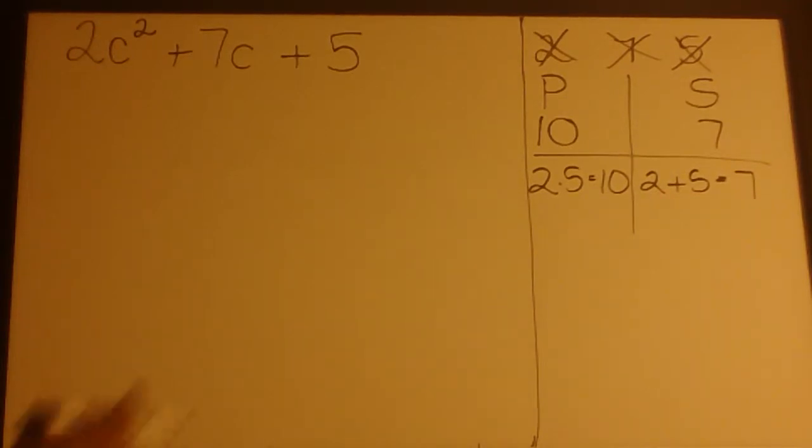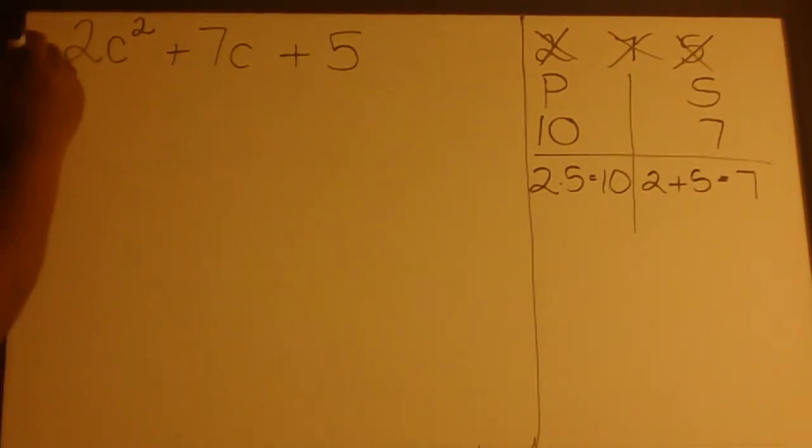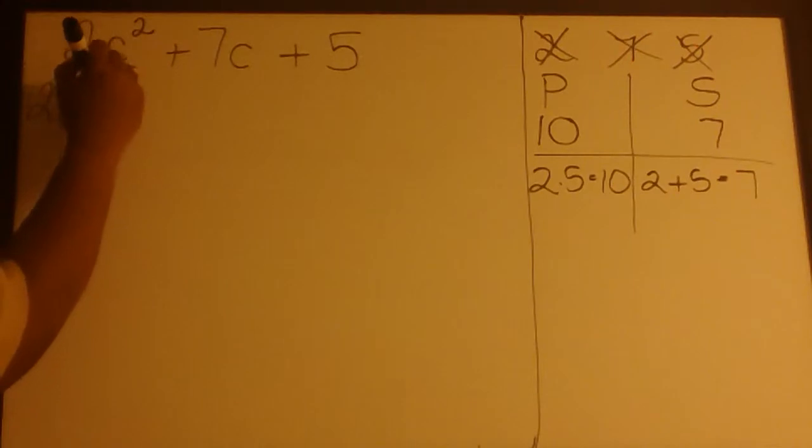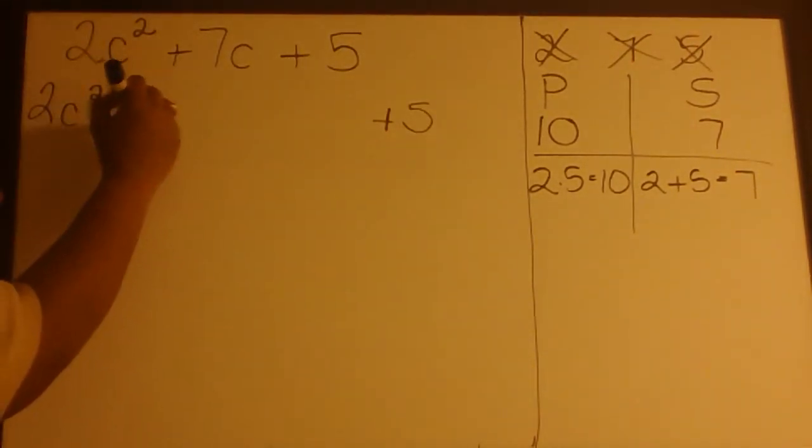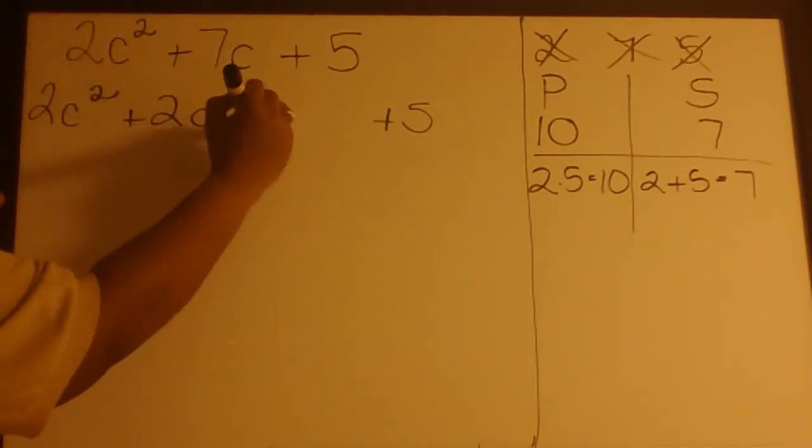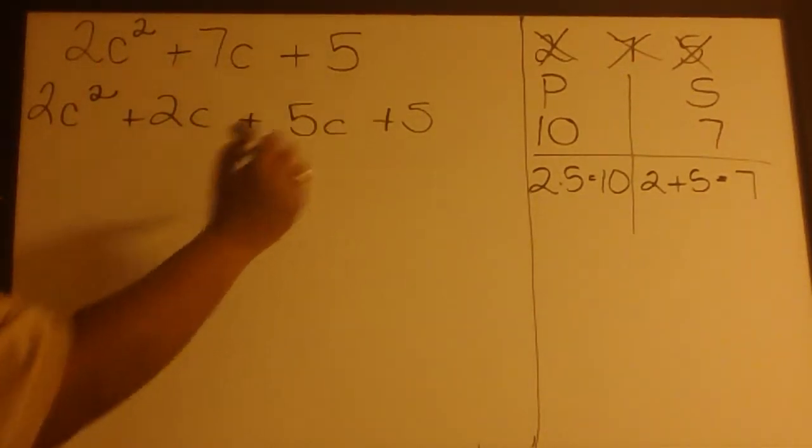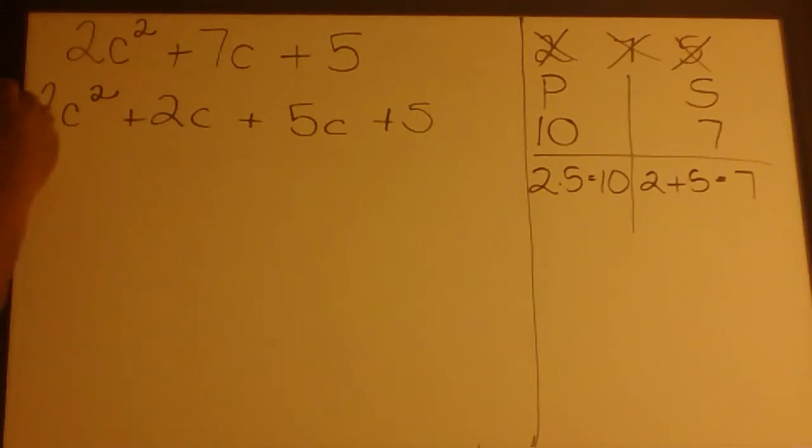So since those numbers work, we'll bring down our ends and fill in the middle with 2C and 5C. Now we're ready to group.